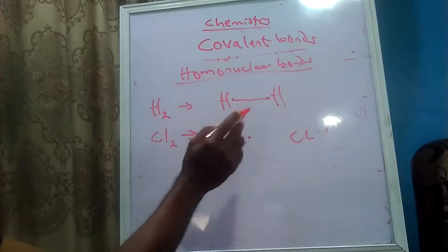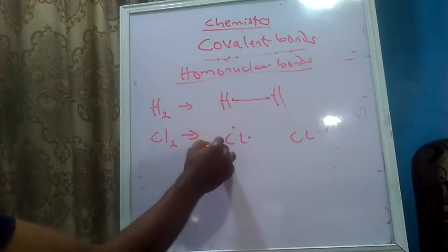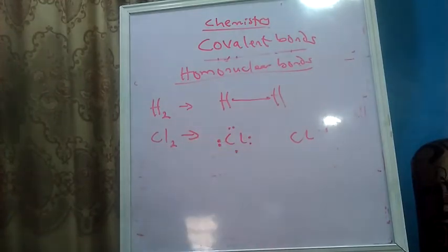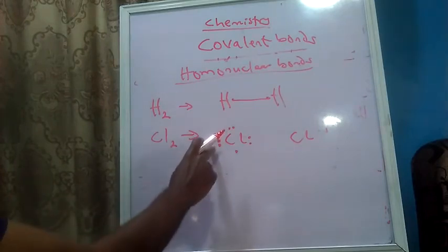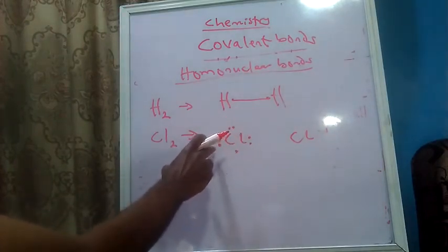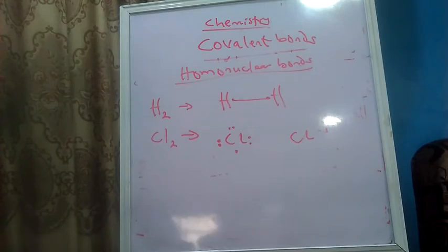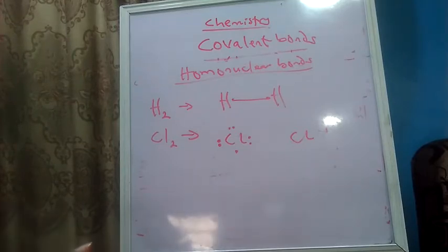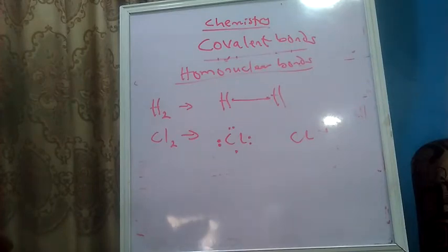As you notice, these electrons are paired, meaning they are not going to form any bond. Remember, bonds are formed because of the unpaired electrons that exist among atoms. Unpaired electrons are not stable, so they need to form a bond. When they form this bond, they become paired and stable. That is the essence of the covalent bonds we see around us.